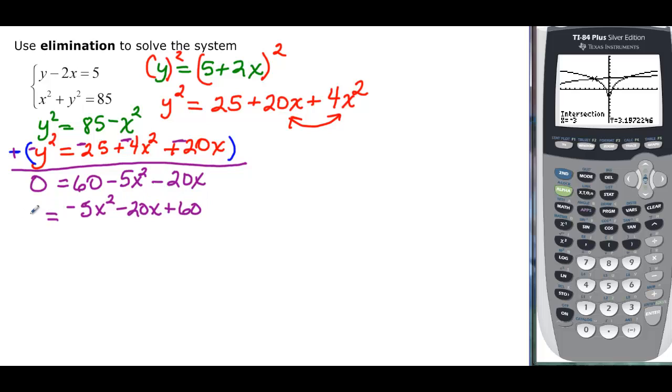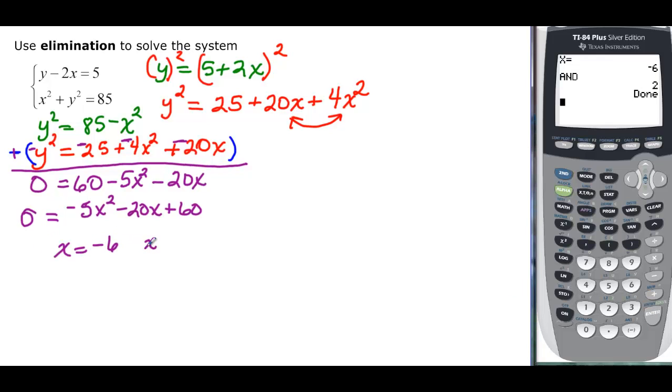And I'm just going to use my quadratic formula so that I don't care that that's a -5x². So, -5 is my a. -20 is my b. And 60 is my c. And I find out that x is equal to -6 and x is equal to 2.